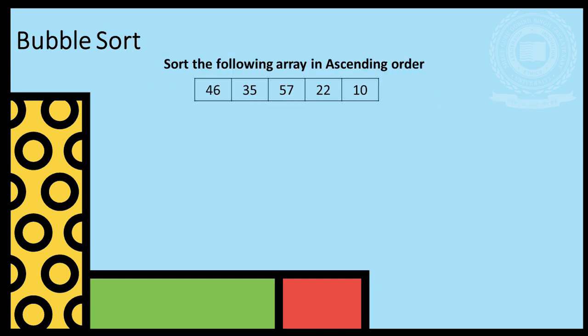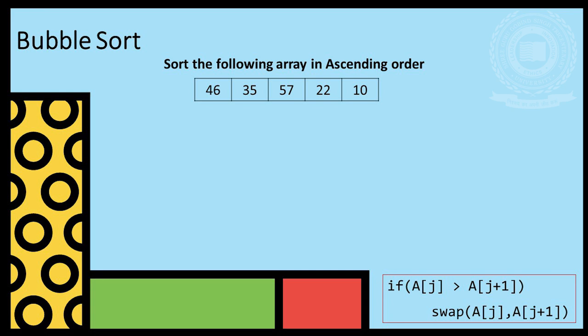We take an example of an array with five elements: 46, 35, 37, 22 and 10. Condition to check for swapping is, if the first element is greater than adjacent element, we swap. Else, we pass. So, we check 46 and 35 and swap.